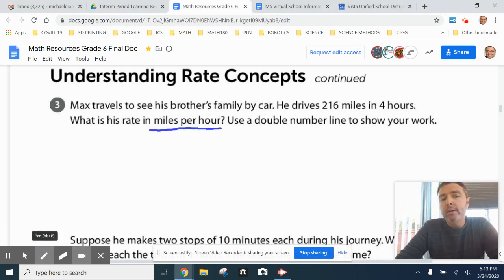Miles per hour. Whenever we see per hour, it means per one hour. So we're looking for if he traveled 216 miles in four, how many did he travel in one?